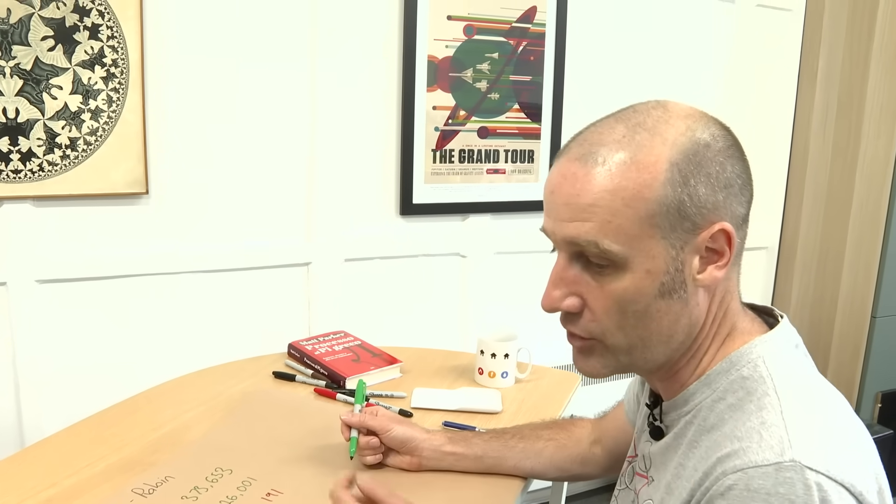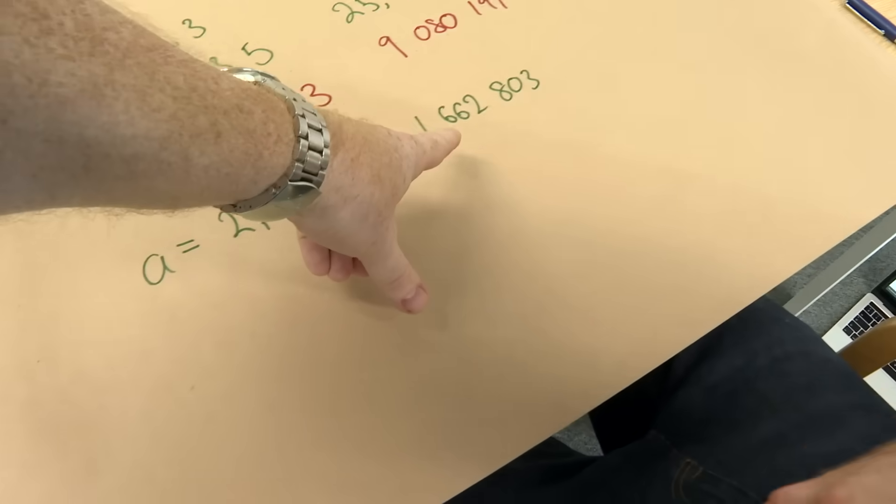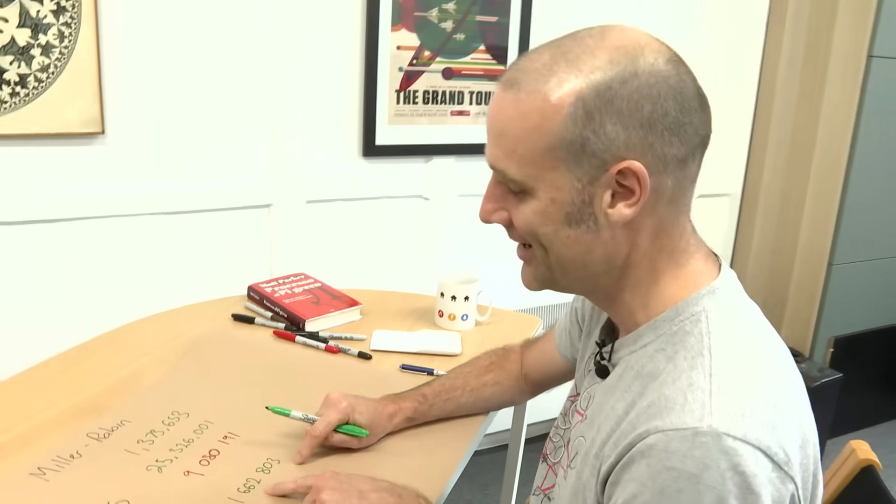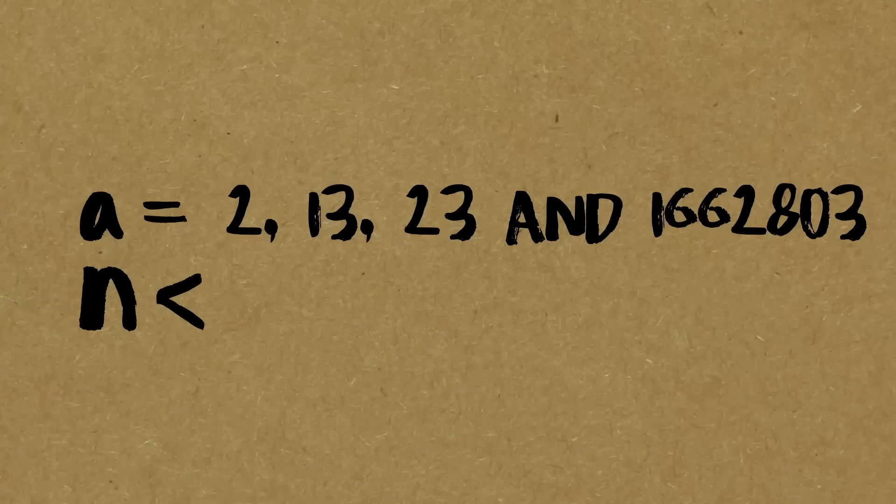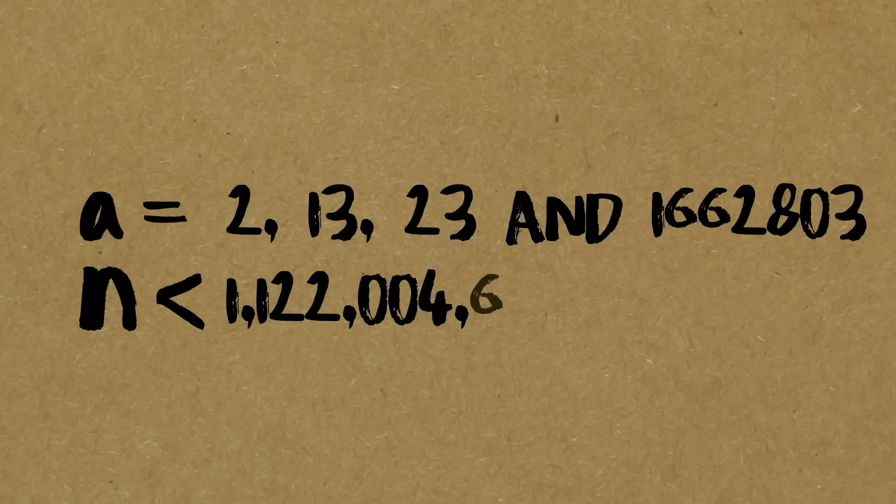So these guys will get you over a quadrillion. So this is like good cop, bad cop. Good cop. Bad cop. Gets results. These get you all the way up to, oh my goodness. One quadrillion, 122 trillion, 4,669,633. So good reach. They don't mess around.